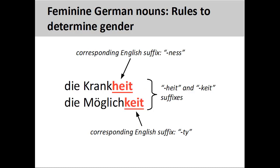Nouns ending in –heit or –keit, such as 'Krankheit,' meaning sickness, and 'Möglichkeit,' meaning possibility, are always feminine. These endings usually have a corresponding English suffix, such as –ness and –ity.